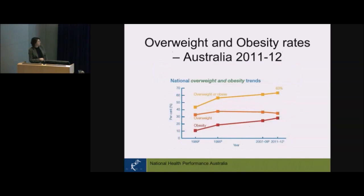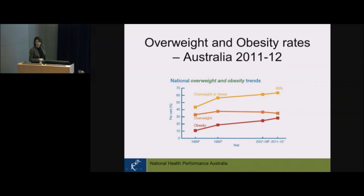Now what's happening in Australia? This is data starting in 1989 going all the way to 2012. You can see that the rate of overweight individuals has stagnated from 1989 to 2012, while the rate of obesity has almost tripled. Together, overweight and obese people in Australia make up 63 percent of the population.